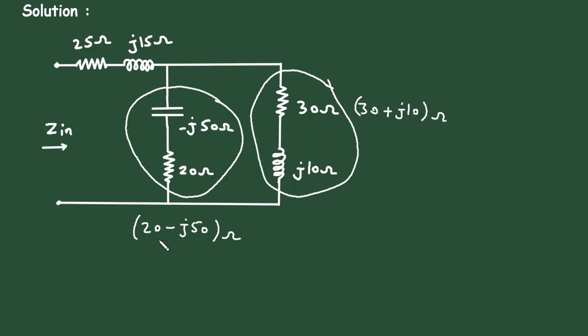So, let's solve this first. It will be 20 minus J50 ohm parallel with 30 plus J10 ohm.